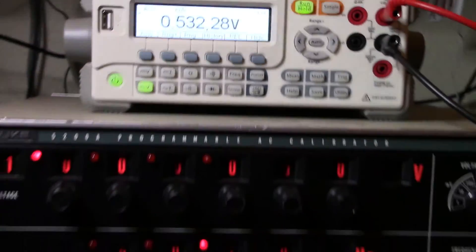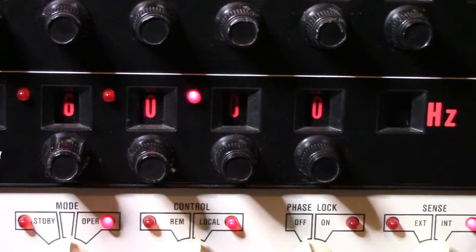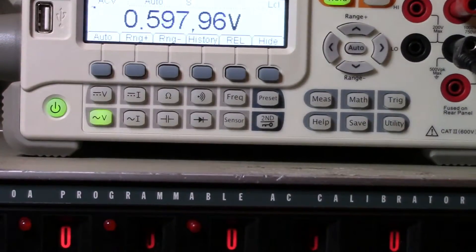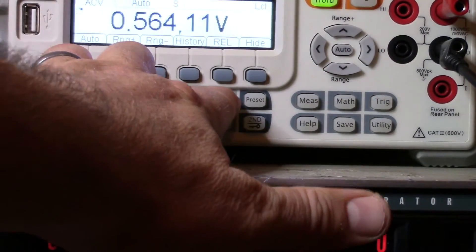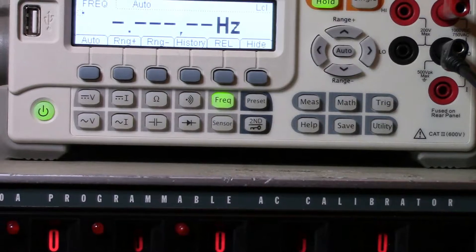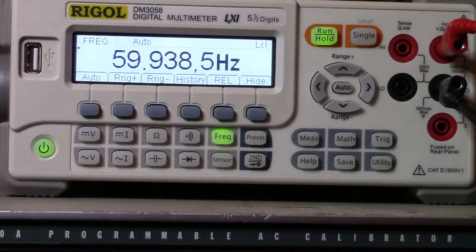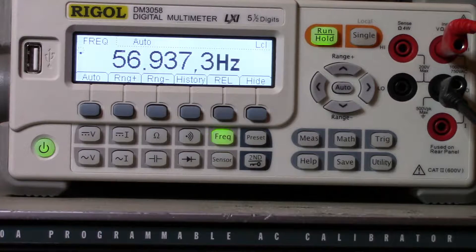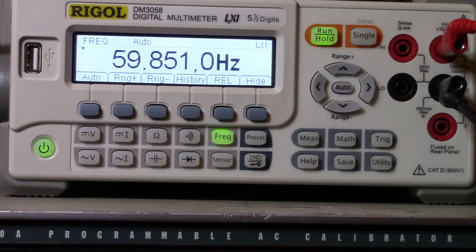You saw that because this is an AC calibrator, you have the opportunity here to go and set a frequency. And I have 60 Hertz set. So let's go and press frequency here and see what we get. Okay. Bouncing around a little bit. You know, if it's stuck around 59 ish, I could buy it.